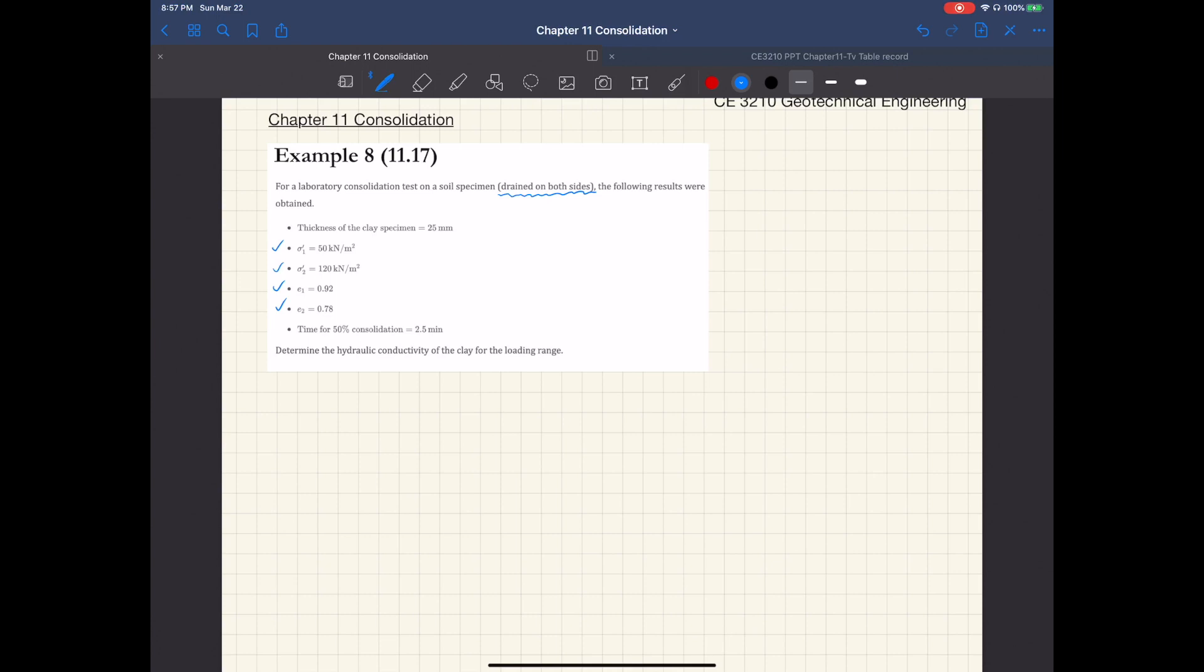So Hdr for this soil specimen is half of 25 millimeters, so 12.5 millimeters. And then you also know the time for 50 percent degree consolidation is 2.5 minutes, and you are asked to estimate hydraulic conductivity k.